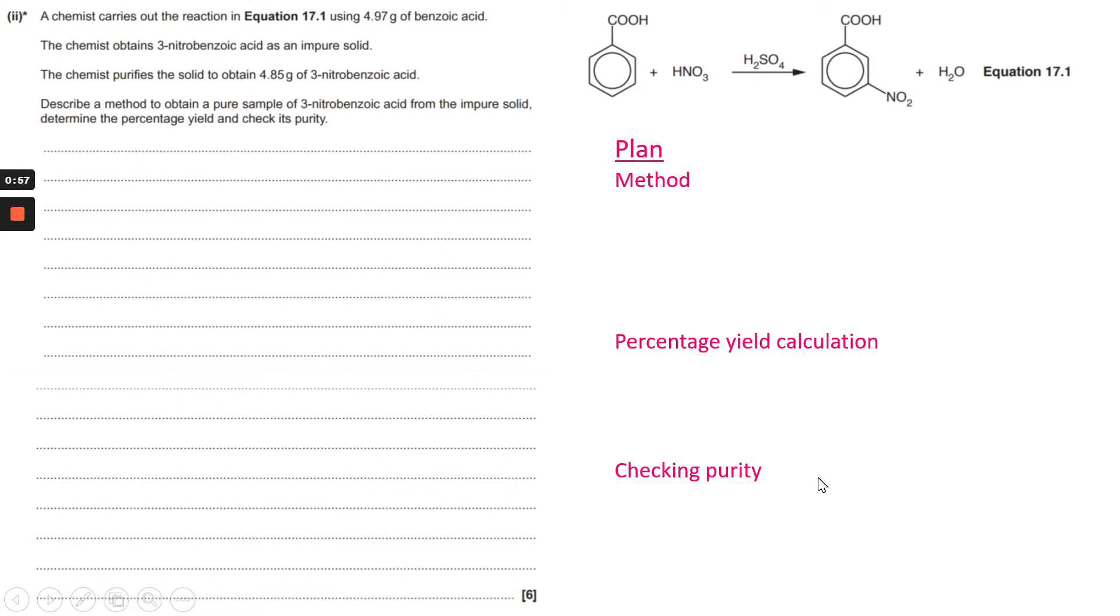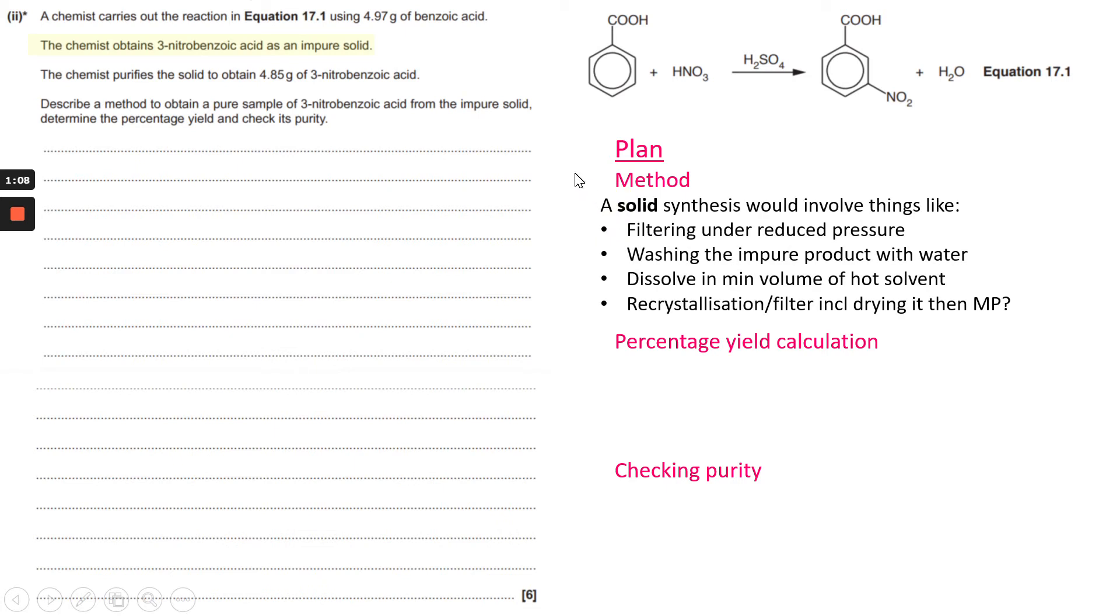In terms of the method, it starts by telling you a chemist obtains three nitrobenzoic acid in impure solid. So when we're talking about a solid synthesis, it involves things like filtering to reduce pressure, washing the impure product with water.